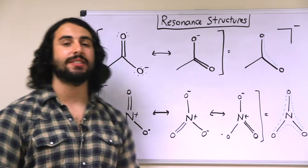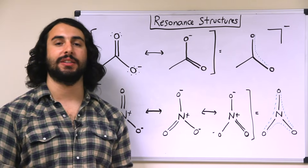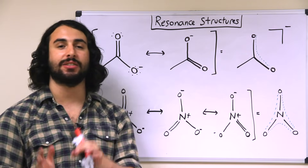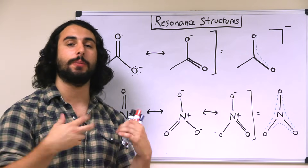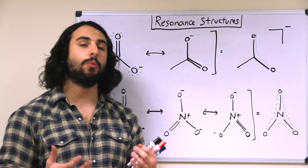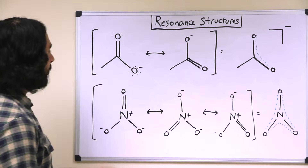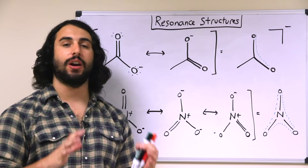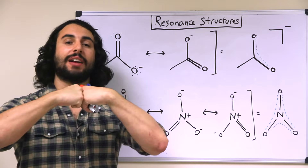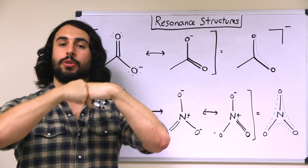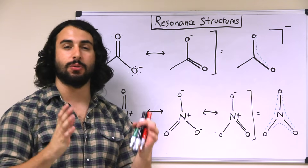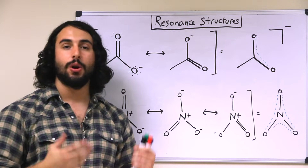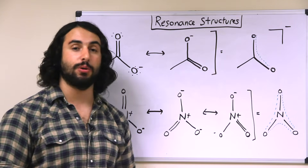It is the case that pi electrons are delocalizable within a structure. That means that if pi electrons can be rearranged to form some other stable resonance structure, they will do so. Sigma electrons cannot do this because they are electrons involved in direct orbital overlap — those are not delocalizable. But the pi electrons, the ones that are the lateral overlap of p orbitals or lone pairs, those are free to move around.